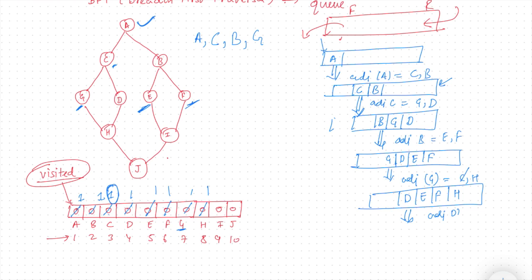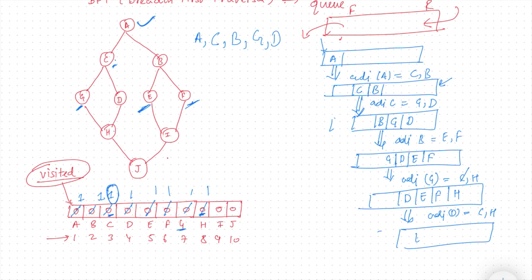I pop out D and check the adjacent of D. The adjacent of D are H and C. In the visited array, both H and C are already visited, so nothing will be added to the queue. We move to the next step with E, F, and H in the queue.